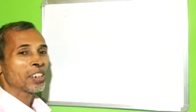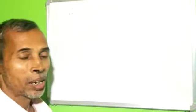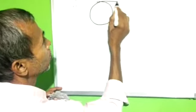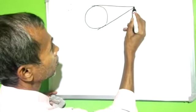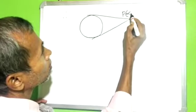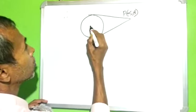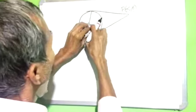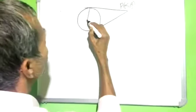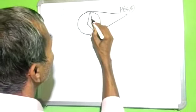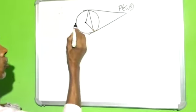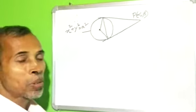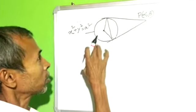Class 11, circle chapter. The equation of circle is x square plus y square equal to a square.